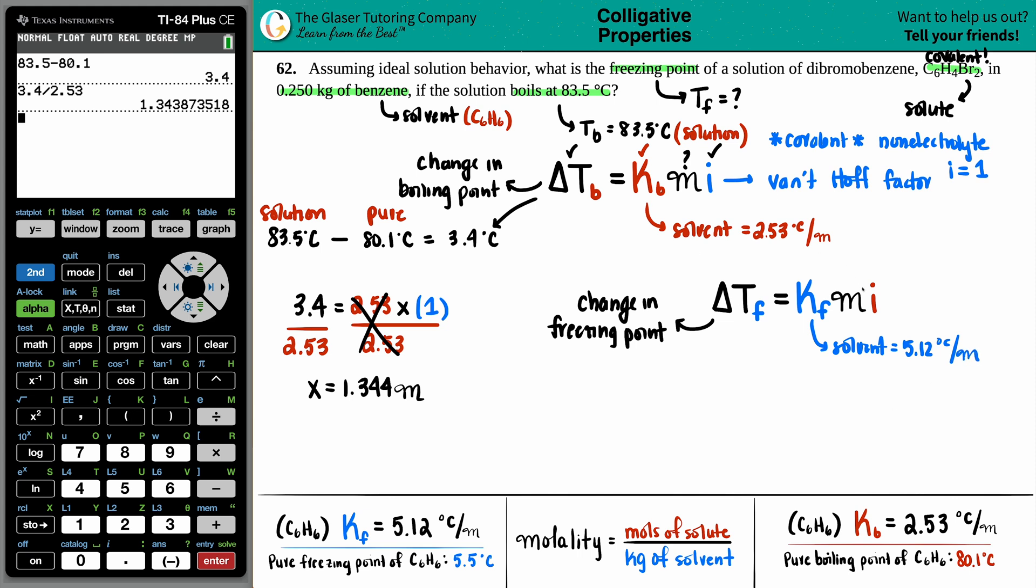And would you look at that? Now I have my molality because it's the same solution. So if you're using the solution for your boiling point, you can use the same molality for your freezing point because you didn't change anything about your solution. So this would be 1.344 molality. And the i value, since everything is staying the same, that's going to be a 1.